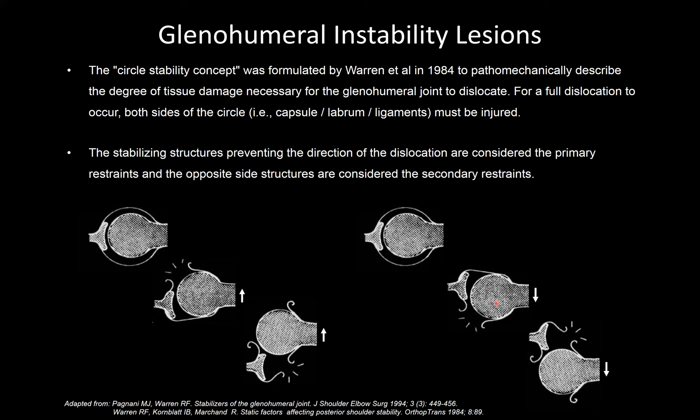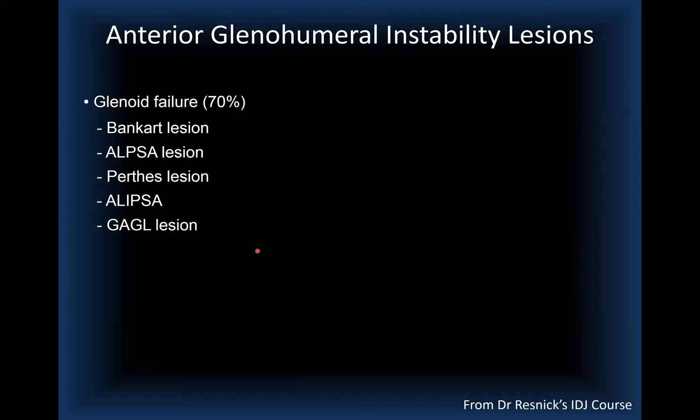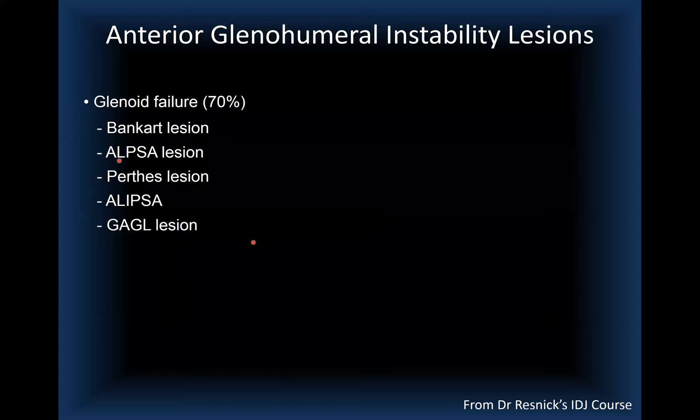Glenoid failure is the most common pattern, occurring in about 70% of cases, with the essential lesion being the Bankart. Bankart variants include ALPSA (anterior labral periosteal sleeve avulsion), Perthes, ALPSA, and GAGL (glenoid avulsion of the glenohumeral ligaments with a normal labrum). Capsular mid-substance failure accounts for about 20% of cases, and humeral-side failure for about 10%.